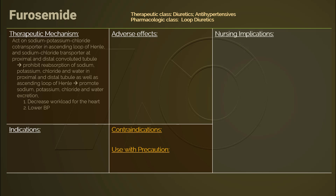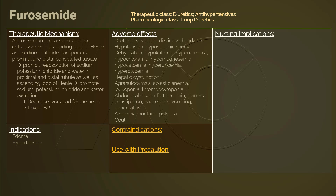The therapeutic results of using furosemide are decreased cardiac workload and lowered blood pressure. Considering these therapeutic effects, edema and hypertension are the indications for it. However, its mechanism of action leads to electrolyte imbalances, dehydration, and hypovolemia — or worse, acute hypovolemic shock.